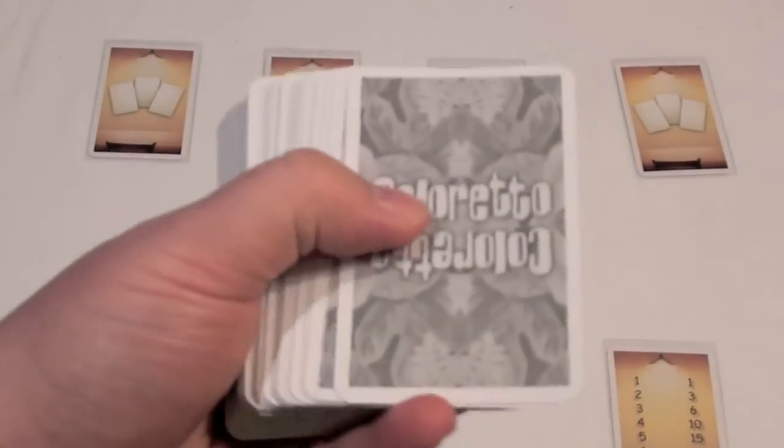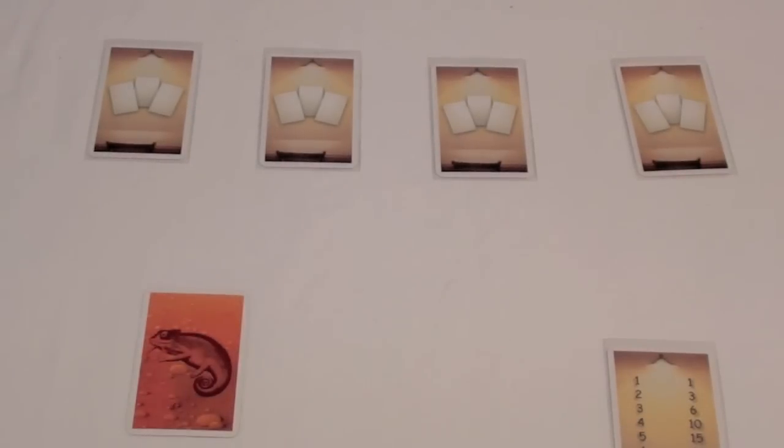At the beginning of each round, each player gets a differently colored card. For example, my player has the orange card, which gives you a general indicator of an area you'd like to start in for collecting cards. As I said, this is a set collection game.